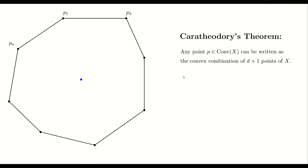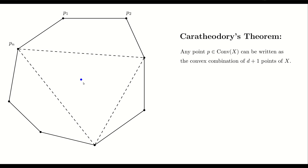The next important theorem is Carathéodory's theorem, which says if you have a point that is inside the convex hull of a set of points, then you can write this point as a convex combination of only d plus one points of that set. For example, in the plane, what it means is that you can find a triangle that contains this point, and since the blue point is inside the triangle, it can be written as a convex combination of its vertices.